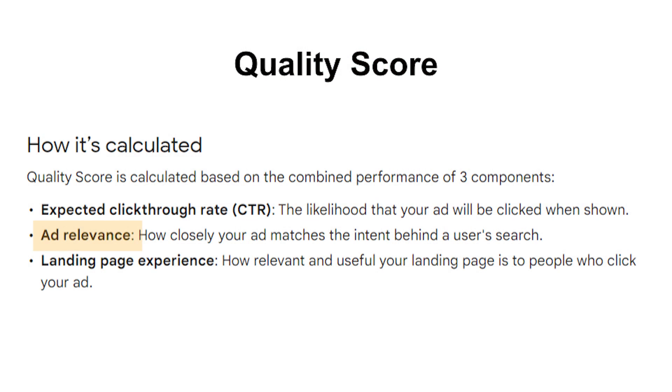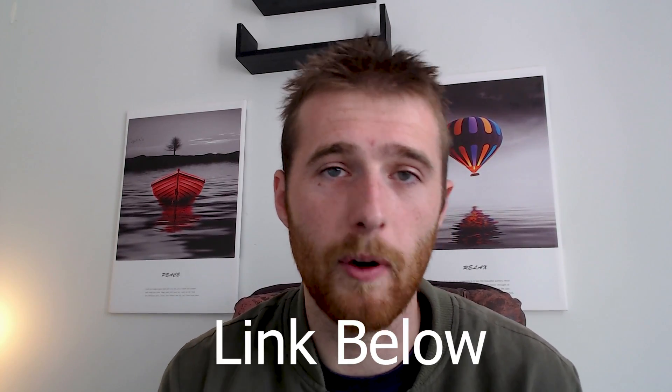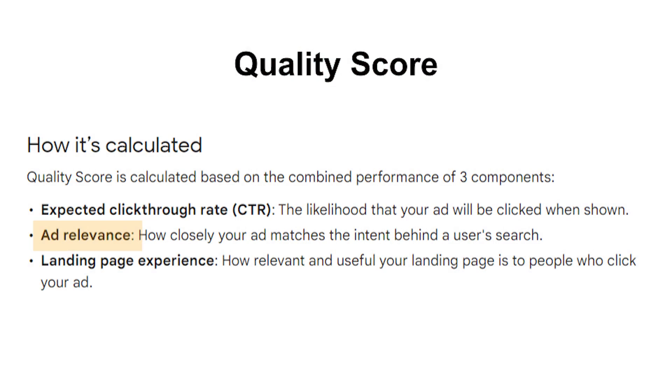Quality score breaks down into three factors. The first is click-through rate — how often people are clicking on your ads. If your ad shows 100 times and gets clicked 10 times, that's a 10% click-through rate. Depending on your industry, that could be good or bad. You can check WordStream — they have an amazing document covering industry averages for click-through rates. Essentially, CTR reflects how relevant your ad is and whether someone is going to click on it.